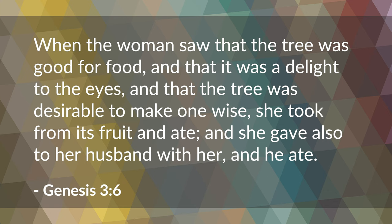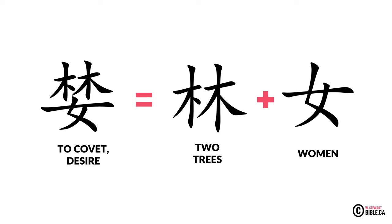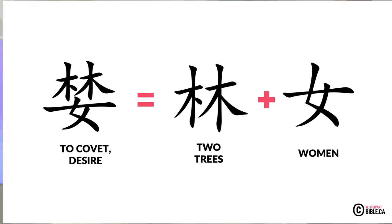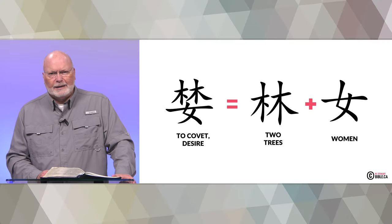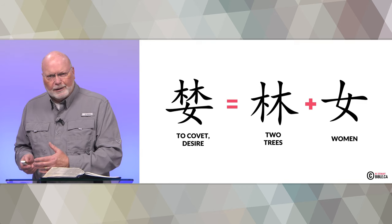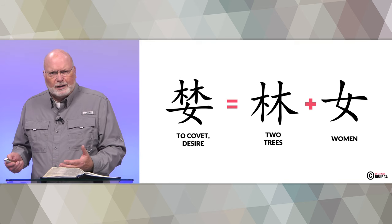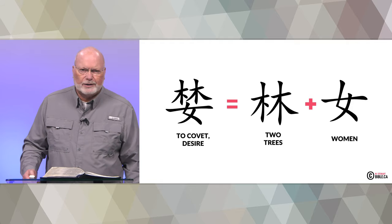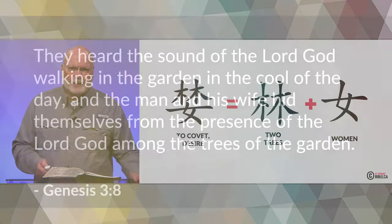Genesis chapter 3 verse 6: 'When the woman saw that the tree was good for food and that it was a delight to the eyes and that the tree was desirable to make one wise, she took from its fruit and ate. She also gave to her husband with her and he ate.' The Chinese character for 'to covet' or 'to desire' is two trees with a woman. Where in the world would they get the idea for coveting being associated with two trees and a woman if not from the third chapter of Genesis? It's an unmistakable parallel.